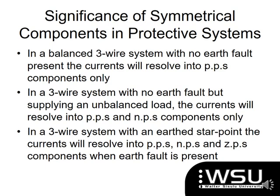In a three-wire system with no earth fault but supplying an unbalanced load, you're going to have a positive and a negative phase sequence. Then if you have that three-phase system that is unbalanced and you've got an earth star point into it, then you are going to have all three of them present: your positive, your negative, and your zero phase sequence.